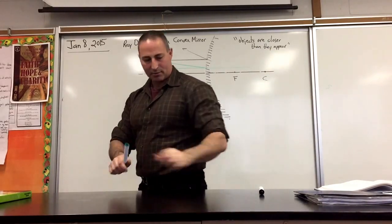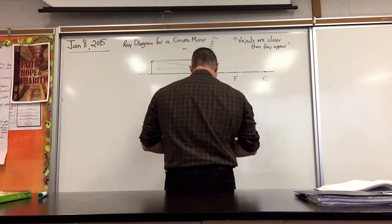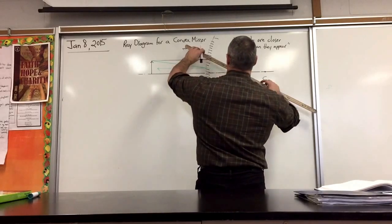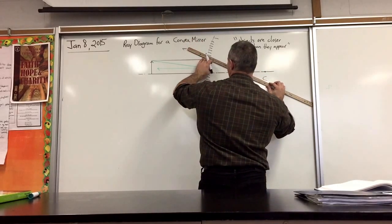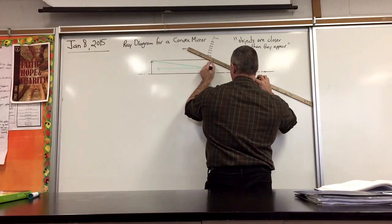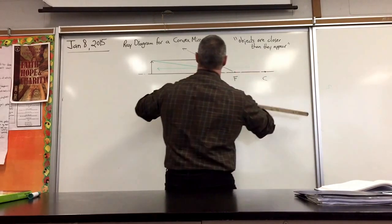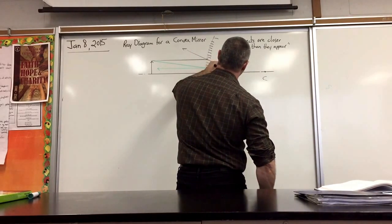Then we'll go back to the black marker and extrapolate the reflected ray on that one as well. Where they cross is where the image forms.